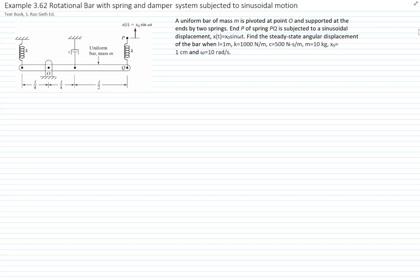This is example 362. It's a rotational bar with springs and damper system subjected to a sinusoidal motion. This is a uniform rigid bar of mass M, pivoted at point O and supported at the two ends by two springs.